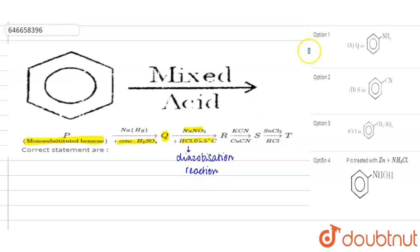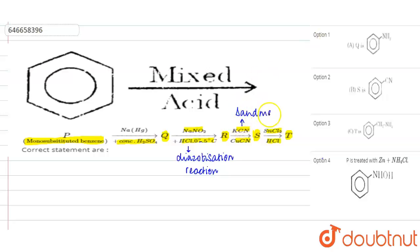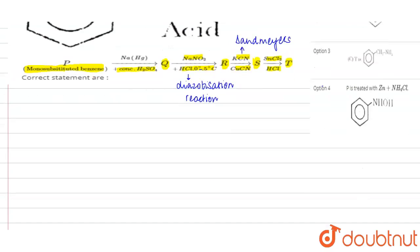R is undergoing Sandmeyer's reaction and forming S. S is undergoing partial reduction with SnCl₂ in the presence of HCl and forming T. Now, which compound undergoes diazotization reaction? Aniline undergoes diazotization reaction, so Q must be aniline.